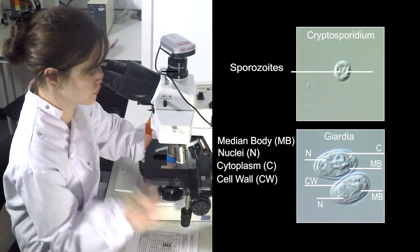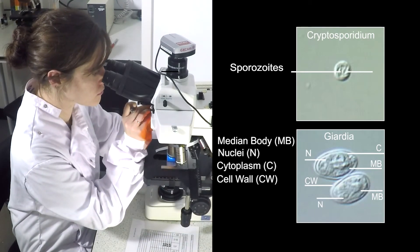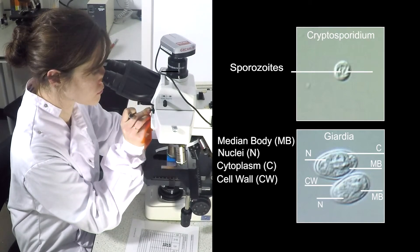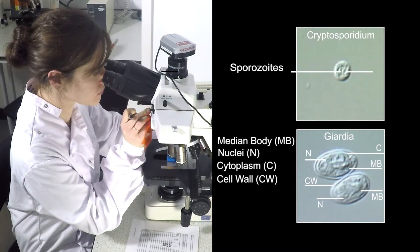For Giardia cysts, the presence of a cell wall, cytoplasm, median bodies, axonemes, and nuclei should be noted.